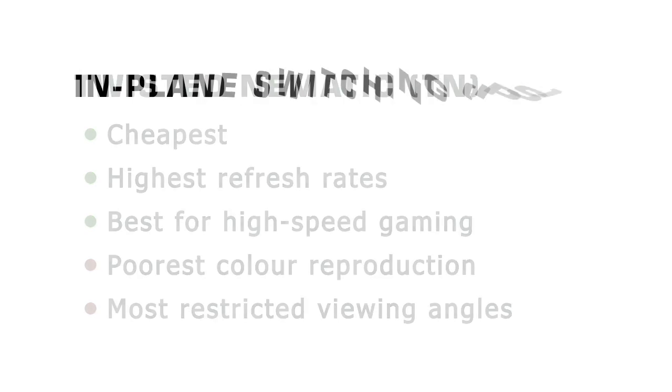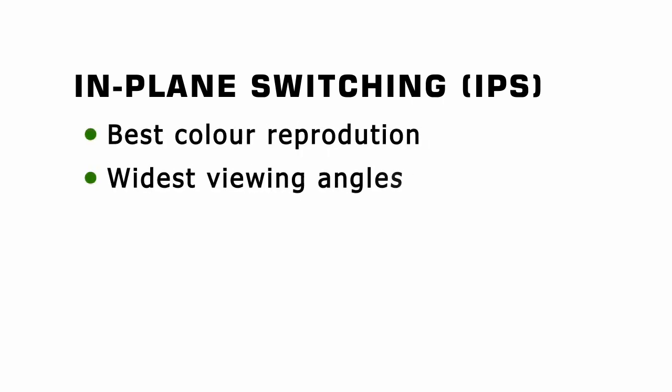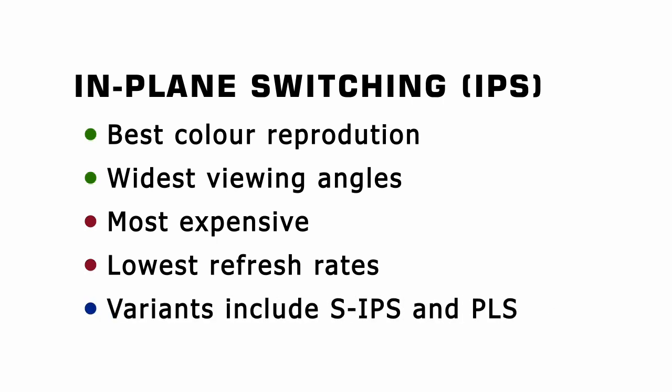The second most common panel type is IPS, which stands for in-plane switching. IPS screens have the best colour reproduction and the widest viewing angles. They are, however, more expensive than other panels and have relatively low refresh rates. Many subcategories of IPS exist, including S-IPS or Super IPS, and a Samsung variant known as plane-to-line switching, or PLS.